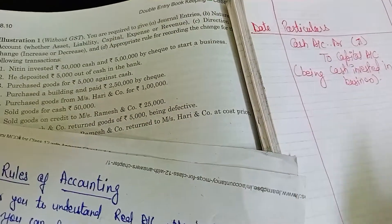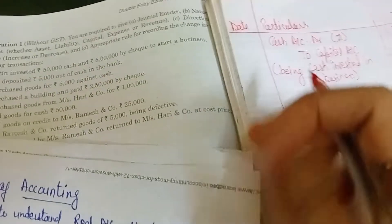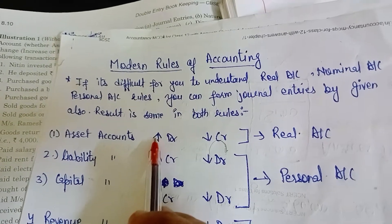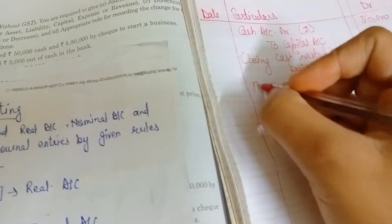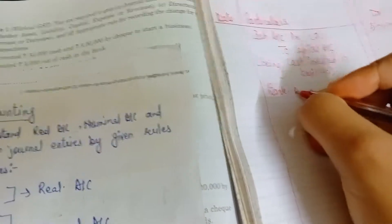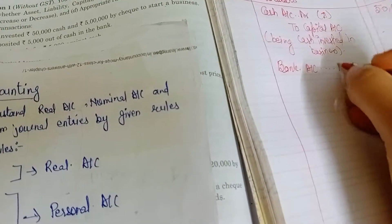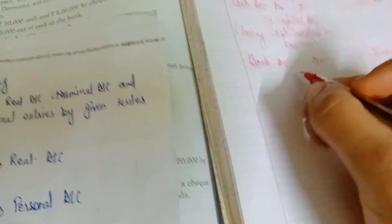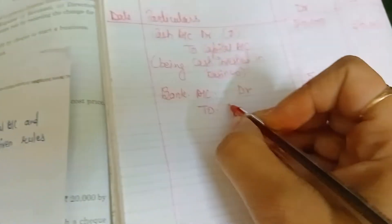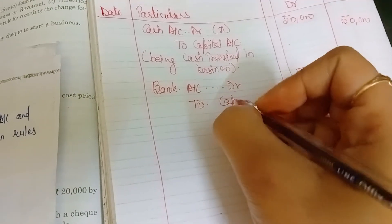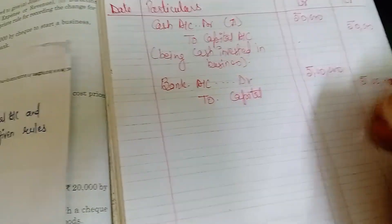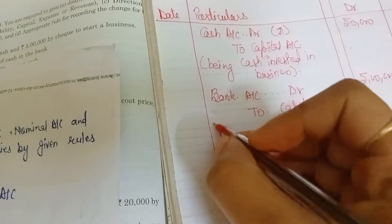In this transaction, 5 lakh rupees is invested by way of cheque, so we will also debit Bank Account, because bank is an asset. Our asset has increased by 5 lakh rupees so we debit bank as well — both our assets are increased so both are debited. Capital investment has also increased, so we credit Capital Account for 5 lakh rupees and write the narration: 'Being capital invested by cheque.'